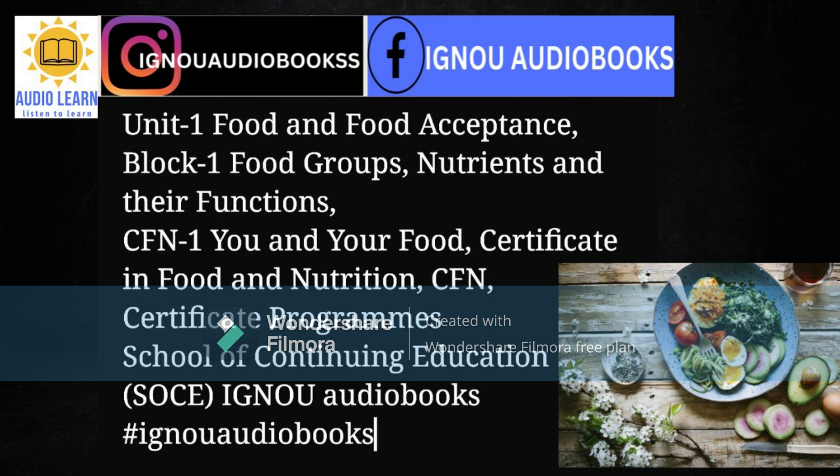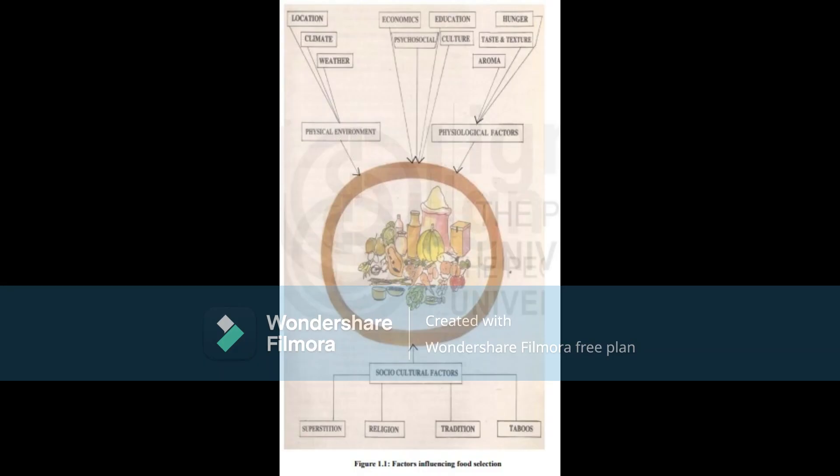Check your progress exercise 1.1. 1. How are the terms food and nutrition different from each other? 2. How do you understand the term nutritional status? 3. What do you understand by nutrients? 4. List the 6 nutrients.